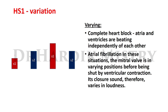The third condition is varying intensity of heart sound one — sometimes diminished, sometimes accentuated. This occurs in complete heart block, because the atria and ventricles beat independently of each other. The second condition is atrial fibrillation, because the mitral valve is in a varying position before being shut by ventricular contractions, so its closure sound varies in loudness.